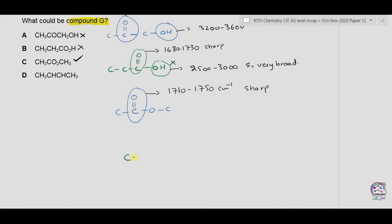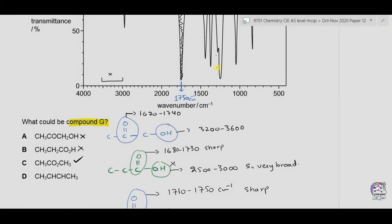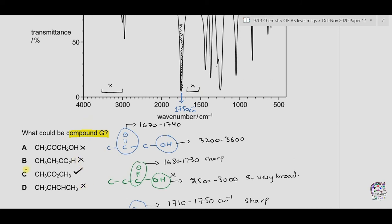Option C has a carbonyl carbon present in an ester, which shows a peak between 1710 to 1750 per centimeter — a sharp peak with no other sharp peaks. Since the only sharp peak is at 1750, option C could be correct. Option D has an alkene functional group, which shows a weak peak between 1500 to 1680 per centimeter. As no such peak is present, D is also incorrect. The answer is therefore C.